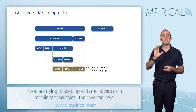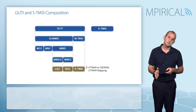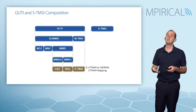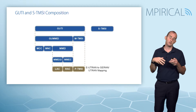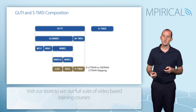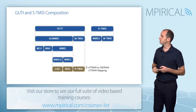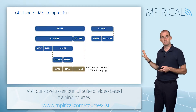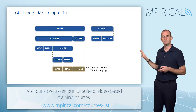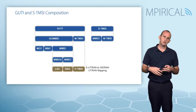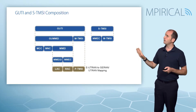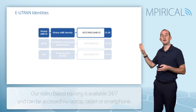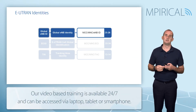We've also got the S-TMSI. The S-TMSI is the shorter version of the GUTI, used routinely in — for instance — paging. The S-TMSI is comprised of the MME code and the M-TMSI. Moving on now, away from the composition of the GUTI, we're going to start moving into the network and look at E-UTRAN identities.